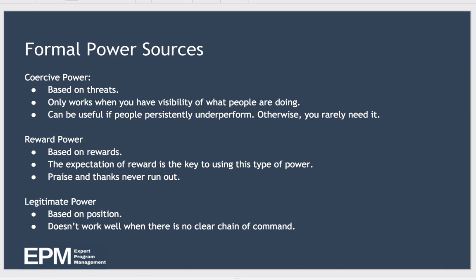Let's look at each of the formal power sources, starting with coercive power. You use coercive power when you threaten that people will be punished in order to gain compliance — such as threatening that they will be fired or demoted unless they hit their objectives. Coercive power only works when you have visibility of what the person under your power is doing; you need high surveillance. With people who consistently fail to meet the requirements of their role, you may need to wield coercive power. Another time it might be appropriate is when an organization is in crisis or cuts are threatened.